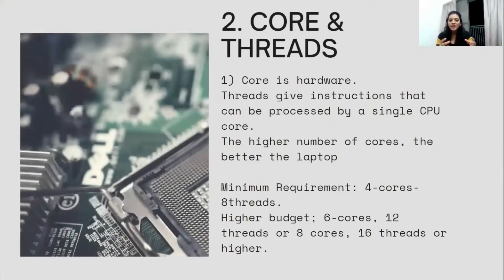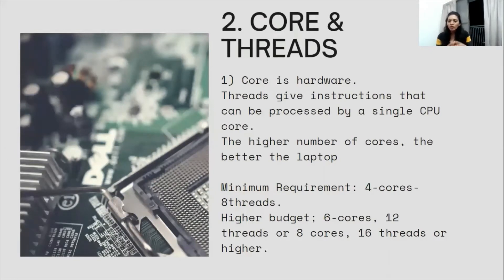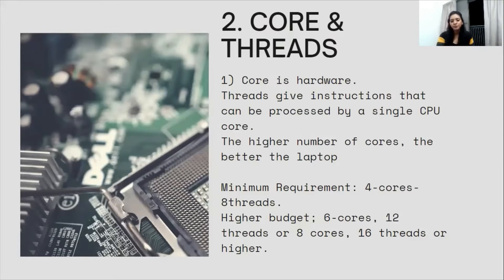Let's move on to the second point: cores and threads. A core is hardware, and threads give instructions to these cores, which can be processed by a single CPU core. The higher number of cores you have, the better the laptop performance is. You should ideally go for four cores and eight threads. On a higher budget, go for six cores and 12 threads, or eight cores and 18 threads or higher. Ideally, the minimum is four cores and eight threads — if a laptop meets that specification, go for it.